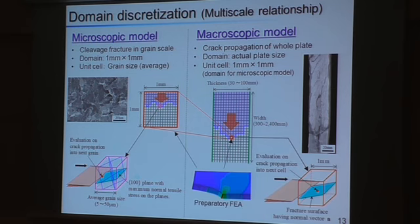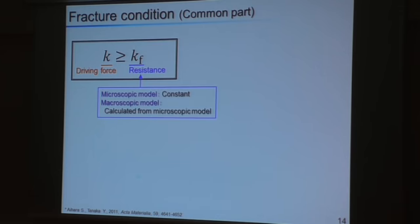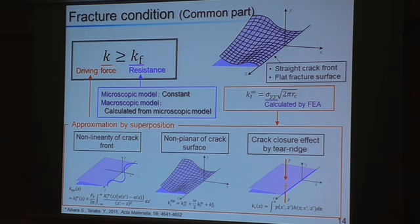The variation of crack propagation is evaluated using a preparatory finite element analysis. Crack propagation is evaluated by a criterion comparing driving force and resistance. Resistance is defined as a material constant in the microscopic model, and in the macroscopic model, resistance is calculated from the microscopic model. For the calculation of stress intensity factor, superposition of appropriate solutions for the effect of three crack shapes is performed.